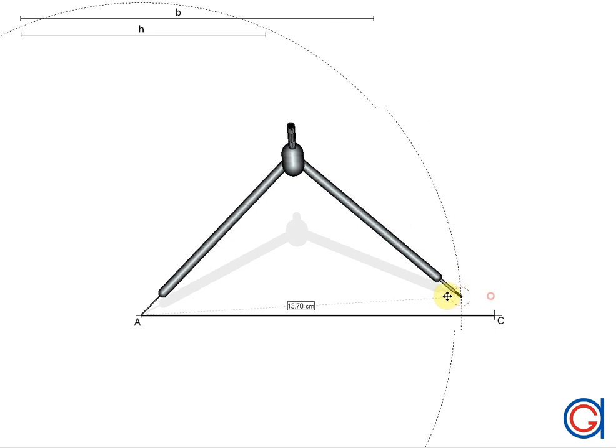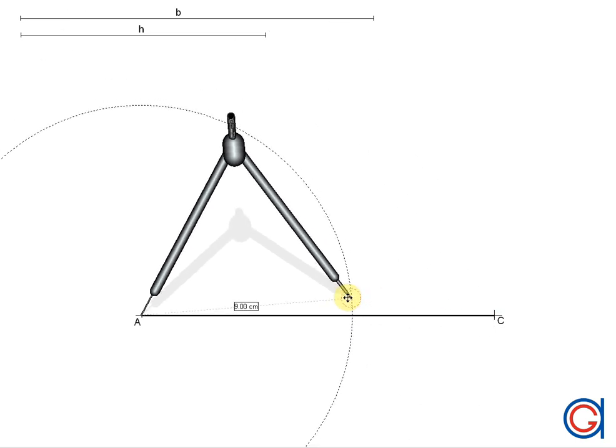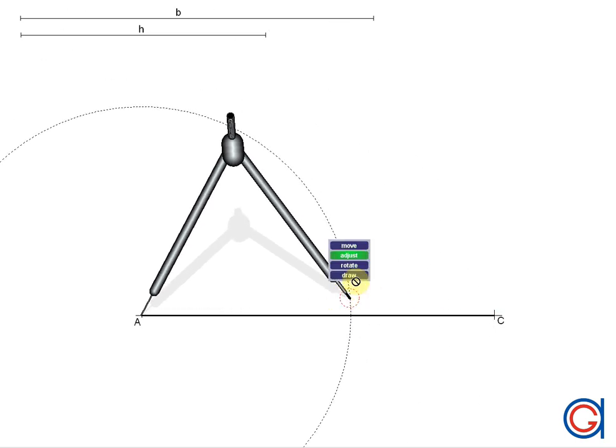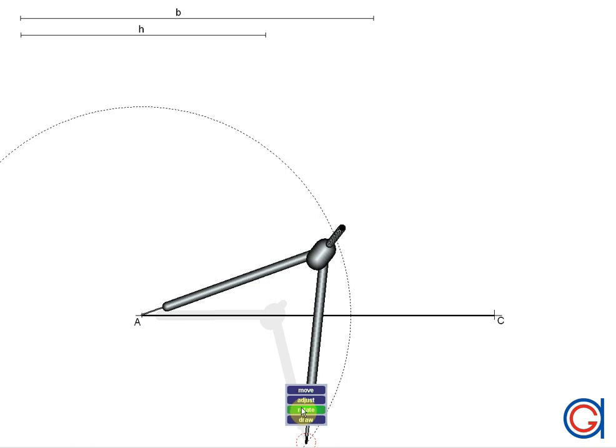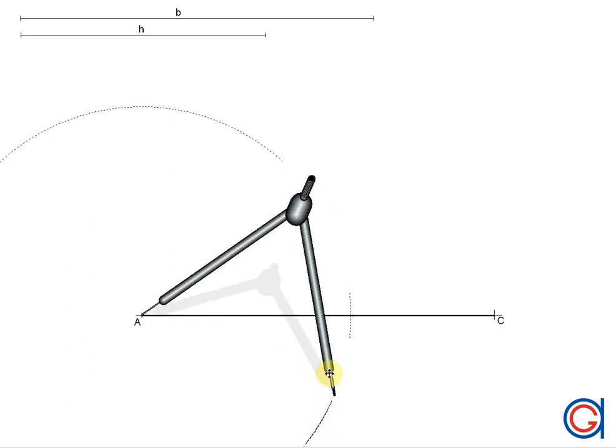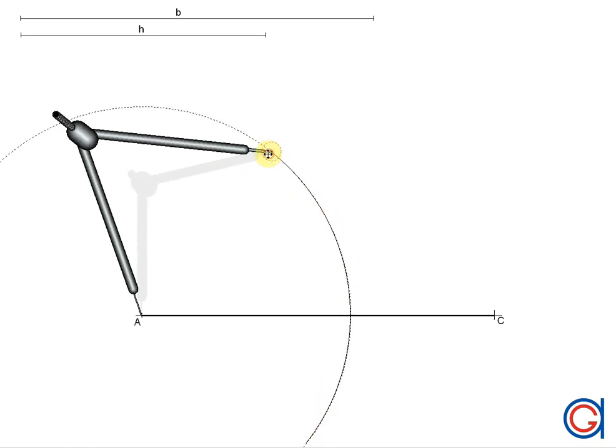And setting our compass on A, we would scribe an arc above and below the line until it intersects our previously drawn arc at two points, as shown here.